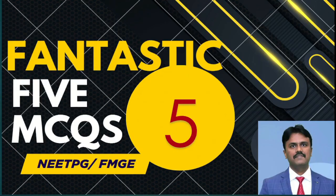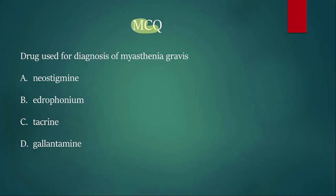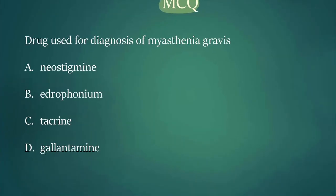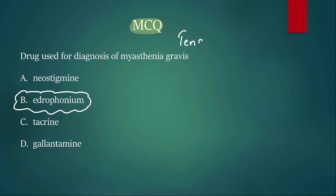Let us start the fantastic five MCQs discussion. First MCQ: drug used for diagnosis of myasthenic crisis — option A neostigmine, option B edrophonium, option C tacrine, option D galantamine. If you answered edrophonium, you are right. The test is also called the Tensilon test.